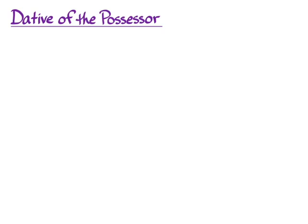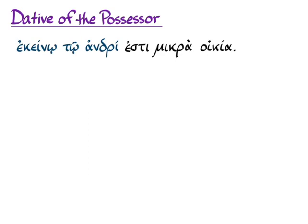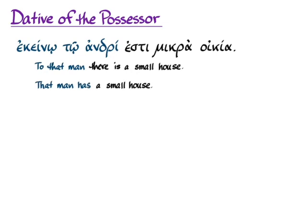Dative of the possessor is another in your list of things that the dative can do. 'To that man there is a small house' is a nice literal way of doing that, preserving one of the default ways of translating the dative, but English is more likely to express this idea as 'that man has a small house.' When you see dative of the possessor, you can flip it around that way to make better English instead of translationese. Dative of the possessor answers the question of what somebody has, instead of putting emphasis on who has it.